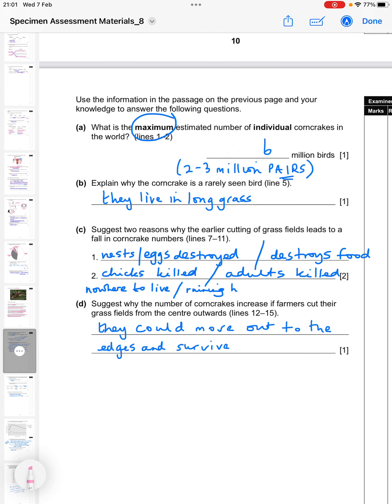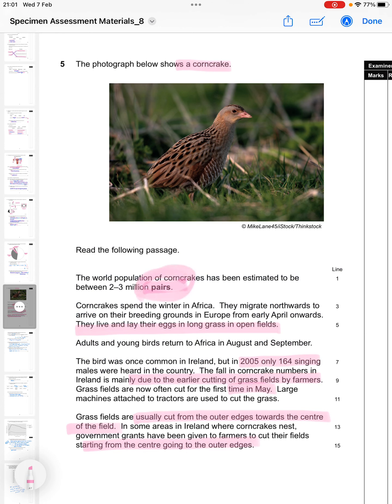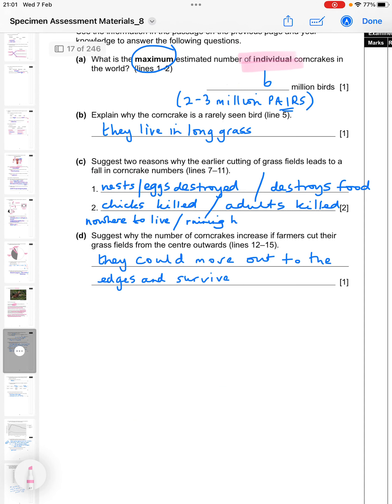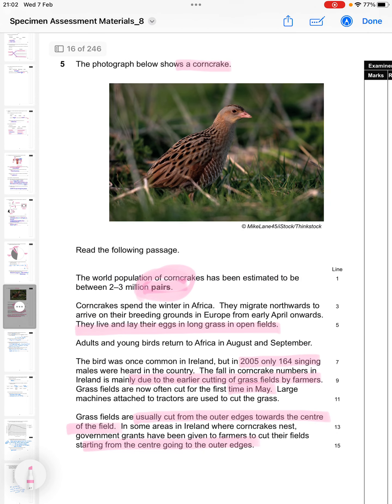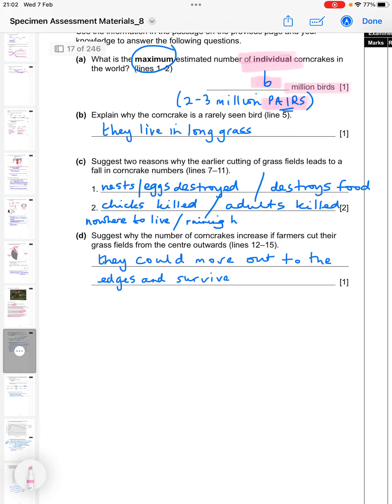So, it says, use the information in the passage on the previous page and your knowledge to answer the following questions. So what is the maximum estimated number of individual corncrakes in the world? You remember on the previous page it said 2 to 3 million pairs. So the maximum there would be 3 million pairs and 3 million pairs is 6 million birds. Then explain why the corncrake is a rarely seen bird and it actually gives you a clue it says line five. So if we go to line five here it says they live and lay their eggs in long grass in open fields. So my answer there is just they live in long grass.